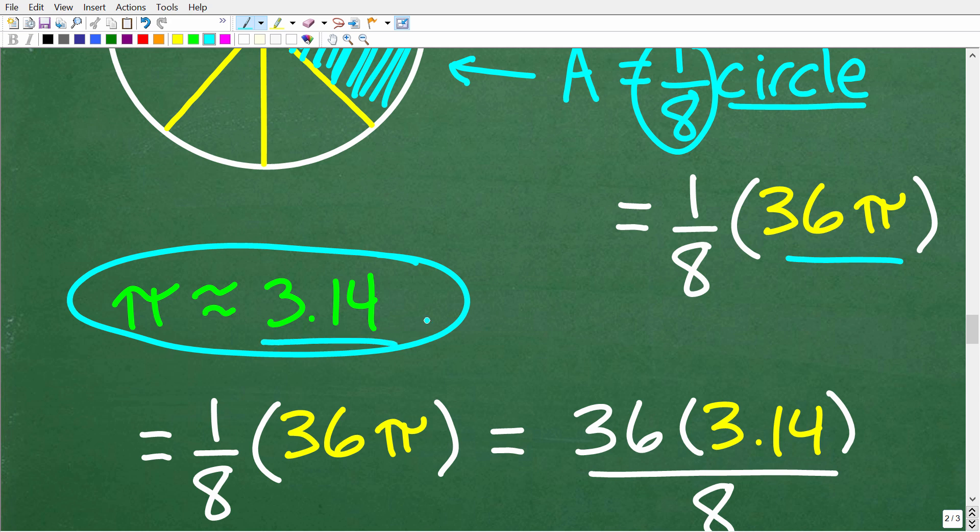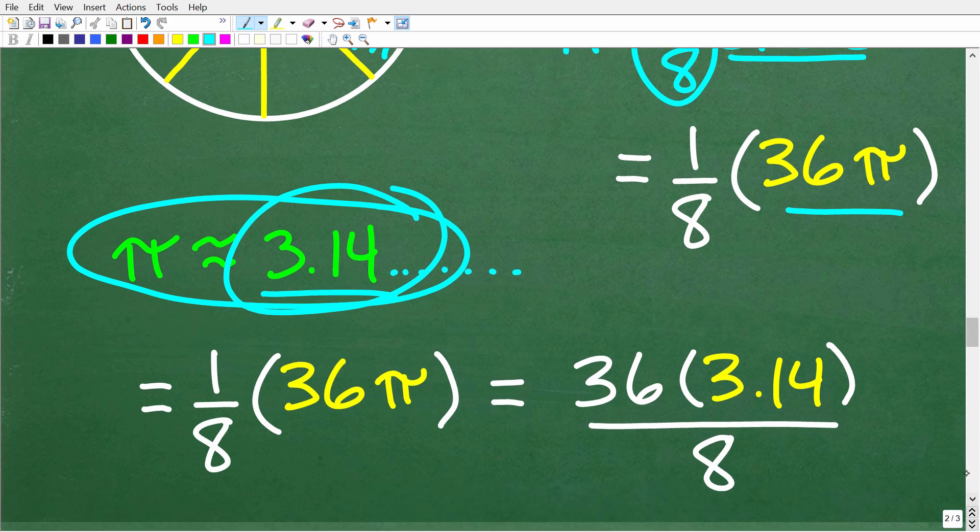We'll let 3.14 represent the value of pi. This is a very rough approximation. You can go out with more decimals here and your answer will be more accurate. But I'm going to use a very rough approximation of 3.14 just to keep the math nice and simple. So this is going to be one eighth times 36 times pi. We are going to replace this pi with 3.14.